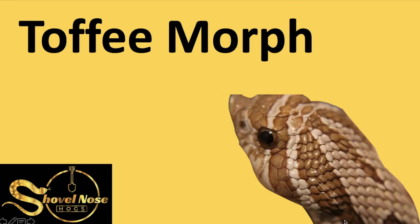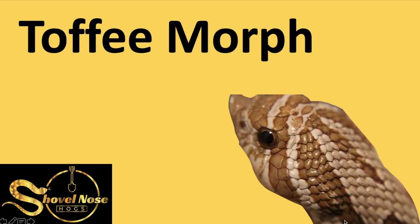The toffee is actually a recessive morph. It gives kind of that brownish color to the animal, and as you can see the belly usually has some melanin. It's a t-positive albino — not 100% sure what that means — and the difference between the t-positive and the t-negative: it looks very similar to the caramel gene as well as the smoke hypo and the Dutch hypo.